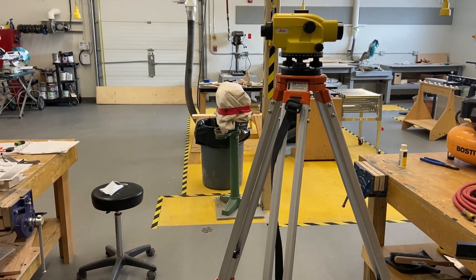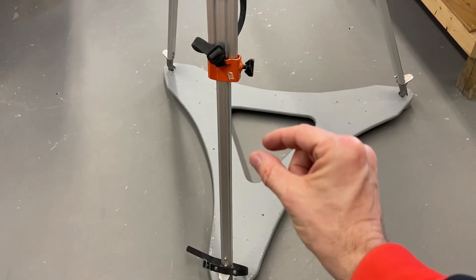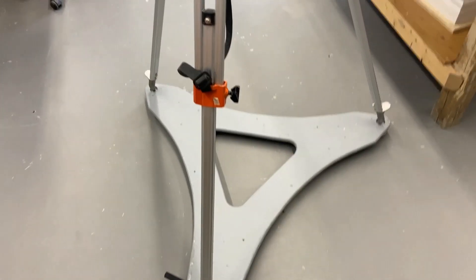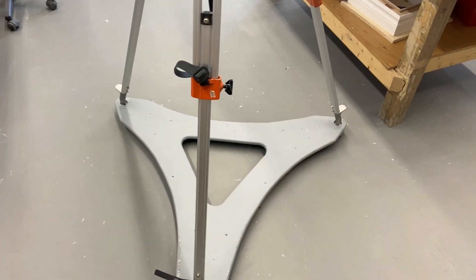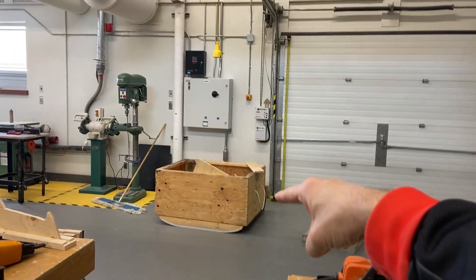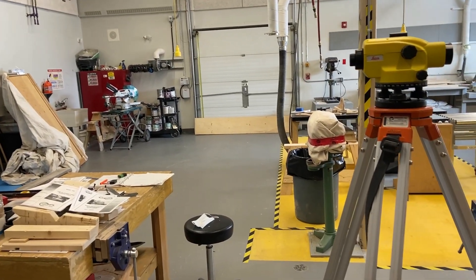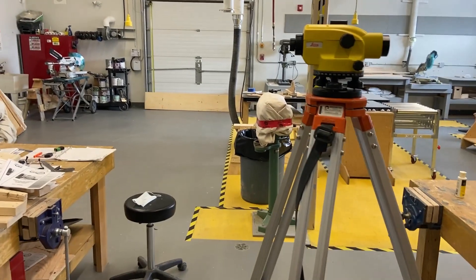The instrument does not need to be set up over a benchmark necessarily for this, a known point of reference. It could be set up anywhere on site to work out elevations from a known point of reference. That's a tape measure there along the edge of the garage door to another point in space whose elevation needs to be known.